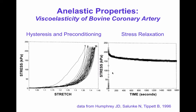Another anelastic property is stress relaxation. In this experiment, the tissue was stretched and held at a fixed length for 1800 seconds. Almost immediately after the stretch, the stress decays — at first fast, then more slowly. In an elastic material, if the strain stayed constant, the stress would be constant. But in real biological tissues this anelastic behavior, known as stress relaxation, is observed. Together, these properties are often called viscoelastic properties — reflecting a combination of elastic behavior and fluid viscous-like behavior.